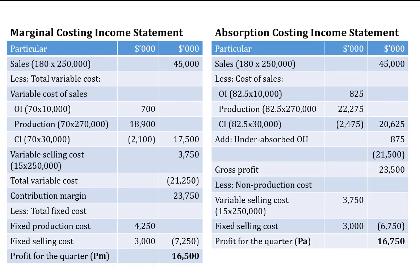Adding the variable cost of sales and the variable selling cost gives us total variable costs of $21,250 thousand. Subtracting $21,250 from our sales figure of $45 million gives the contribution margin — contribution equals sales less all variable costs.